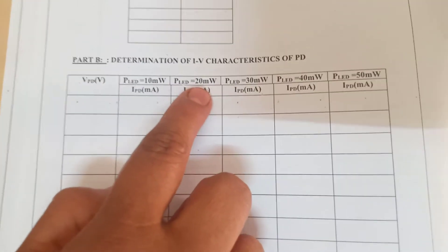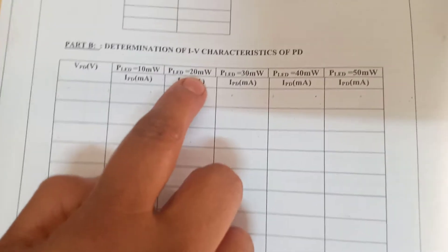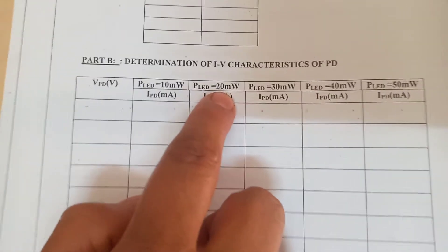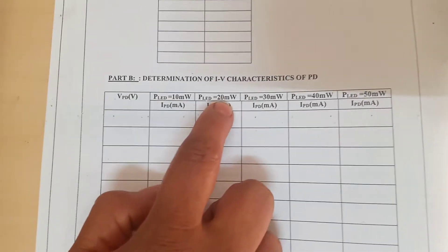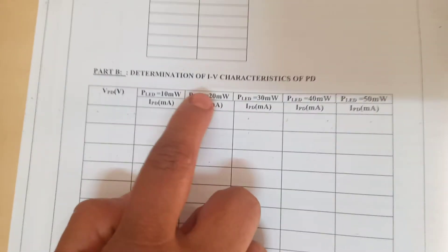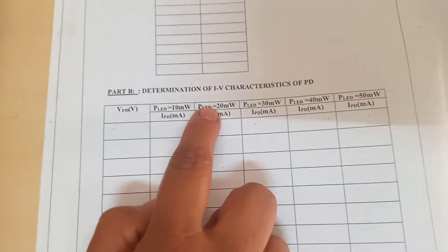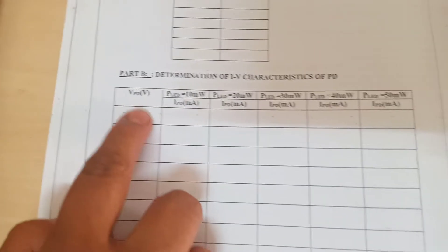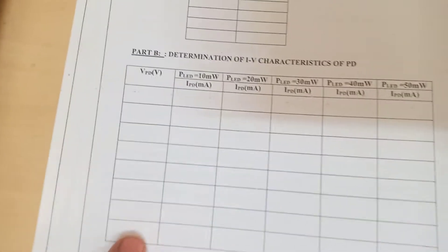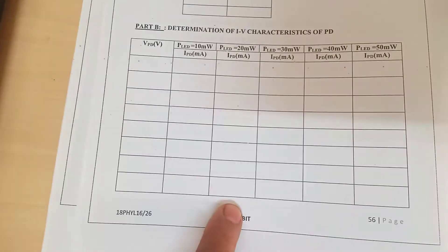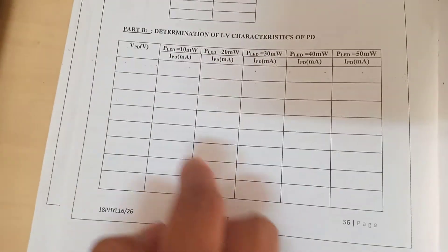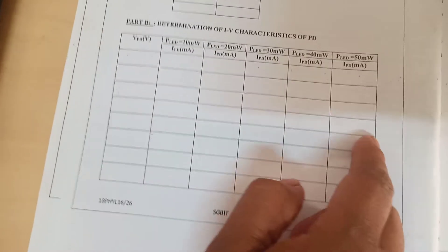This can also be done for another value of PLED, that is 20 milliwatt. Keeping 20 milliwatt constant for PLED, we again change VPD and the corresponding change in IPD should be noted. This can be repeated 3 to 4 times.